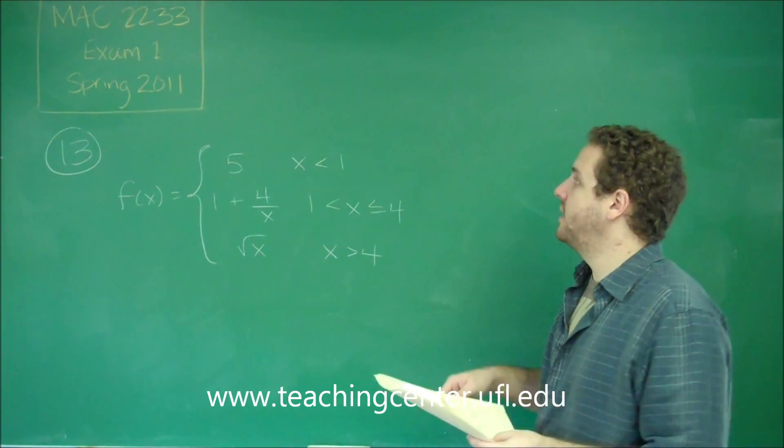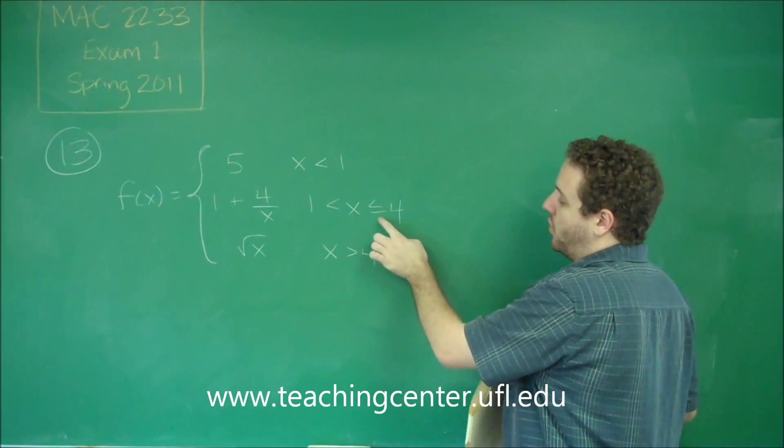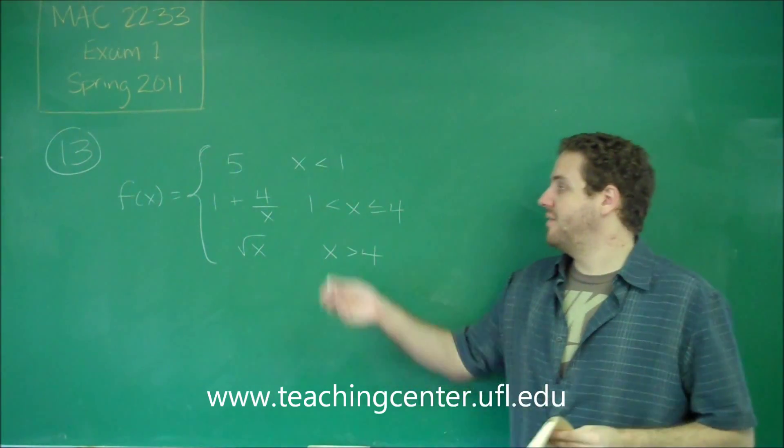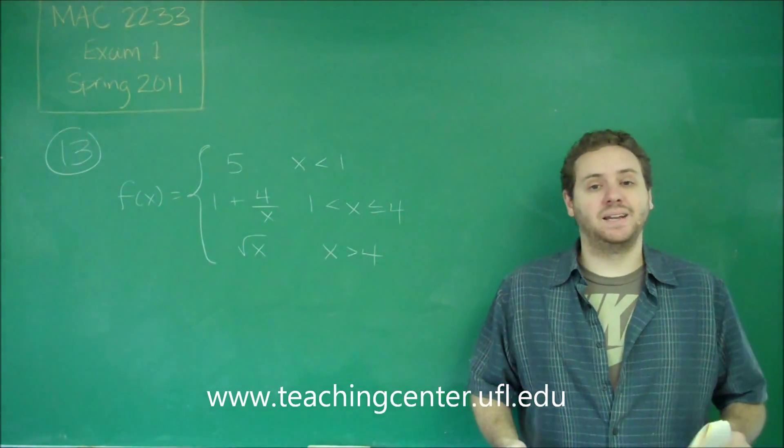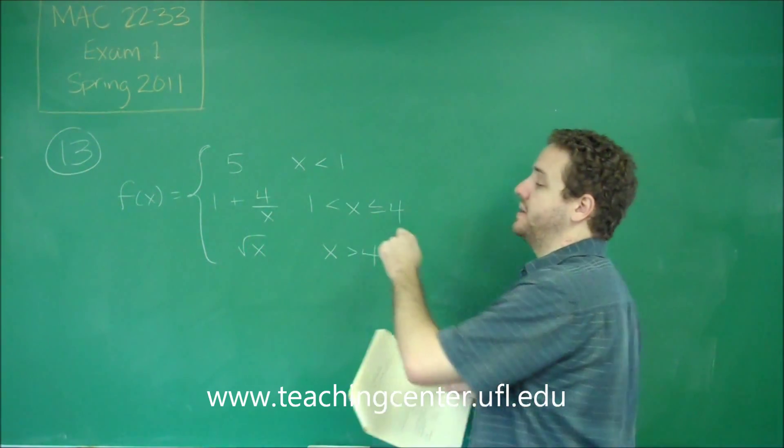So let's look at our only possibility of removable discontinuity, which is at 1. Because here at 4, one of them is equal to. We could never have a removable. And we have no way of cancelling anything from any of these. So our only possible removable discontinuity is where these two pieces meet.